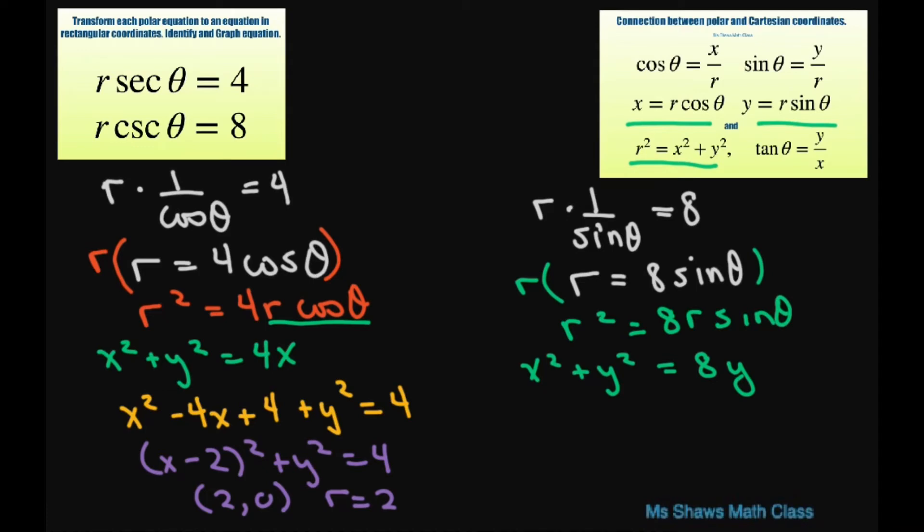Group everything together and you're going to get x squared plus y squared minus 8y, and then complete the square. Take half of 8 and square it—so that's going to be 16. You have to also add the 16 on this side. Alright, from there we can condense our perfect square trinomial and write this as x squared plus y minus, take half of your 8, 4 squared equals 16.